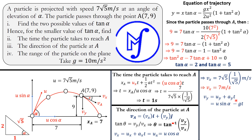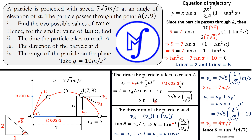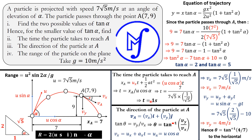To find v_y: using v_y = u_y − g·t, where u_y = u·sin α. With u = 7√5, sin α = 2/√5 (opposite over hypotenuse), g = 10, and t = 1 second: v_y = 7√5 × (2/√5) − 10 × 1 = 14 − 10 = 4 meters per second. Therefore, the direction is theta = tan⁻¹(4/7) to the horizontal.